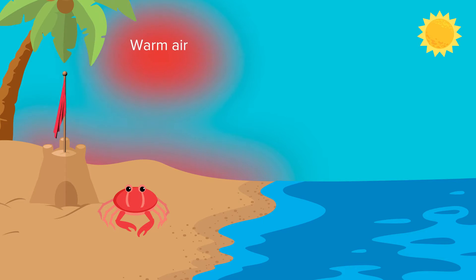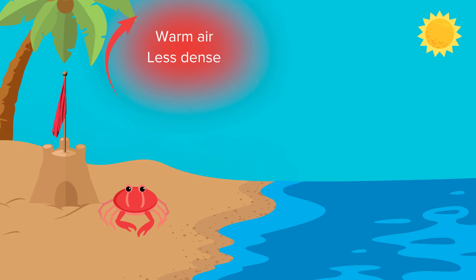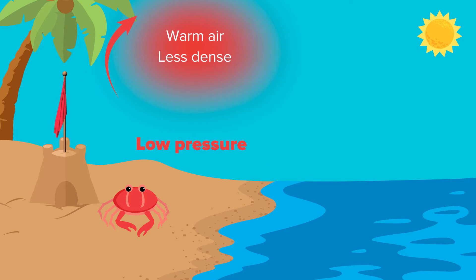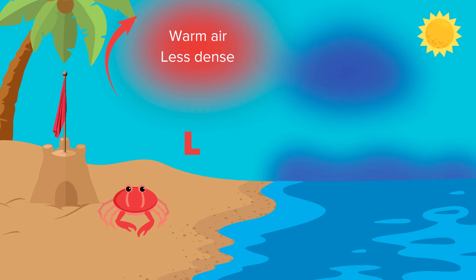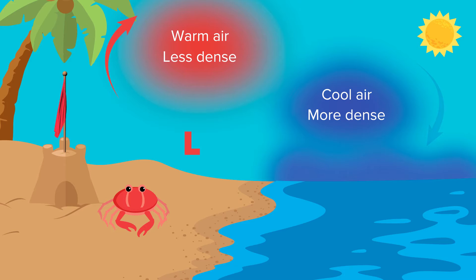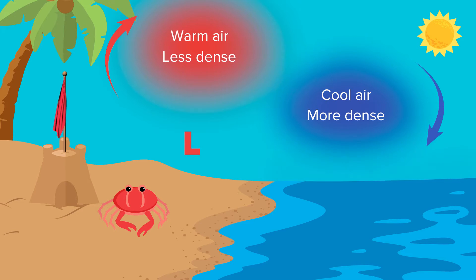Warm air, being less dense, expands and rises, leaving an area of low pressure. Meanwhile, the air over the ocean is cooler. Cooler, denser air sinks over the water, creating an area of high pressure.